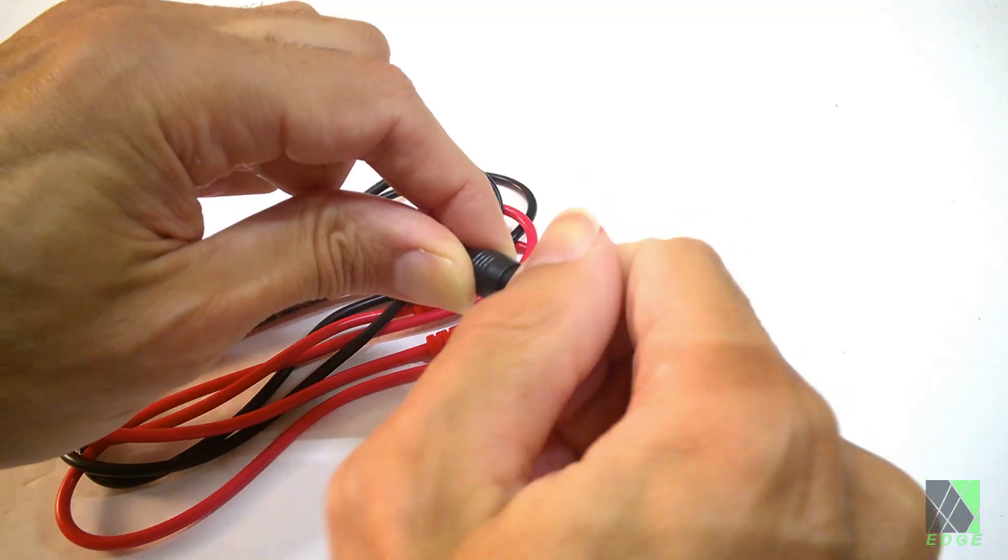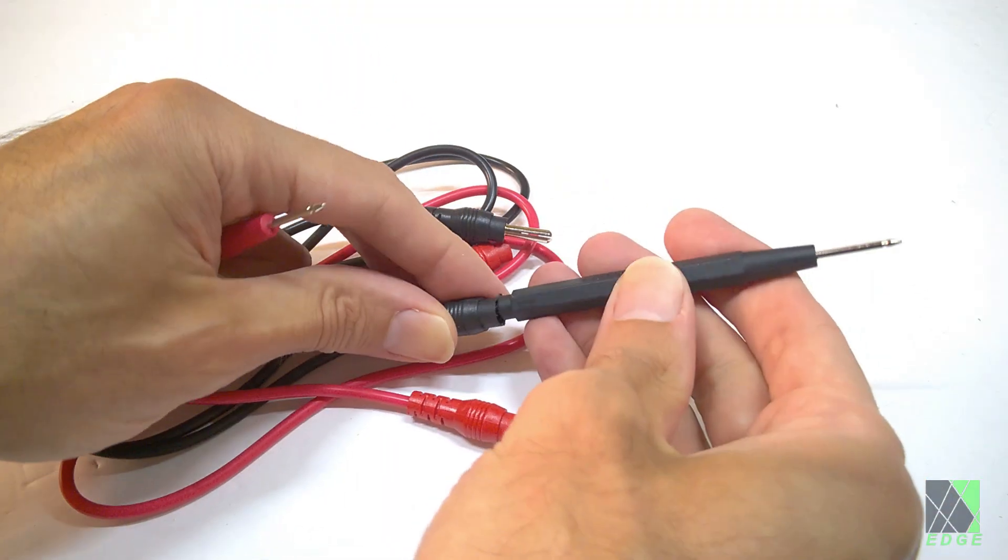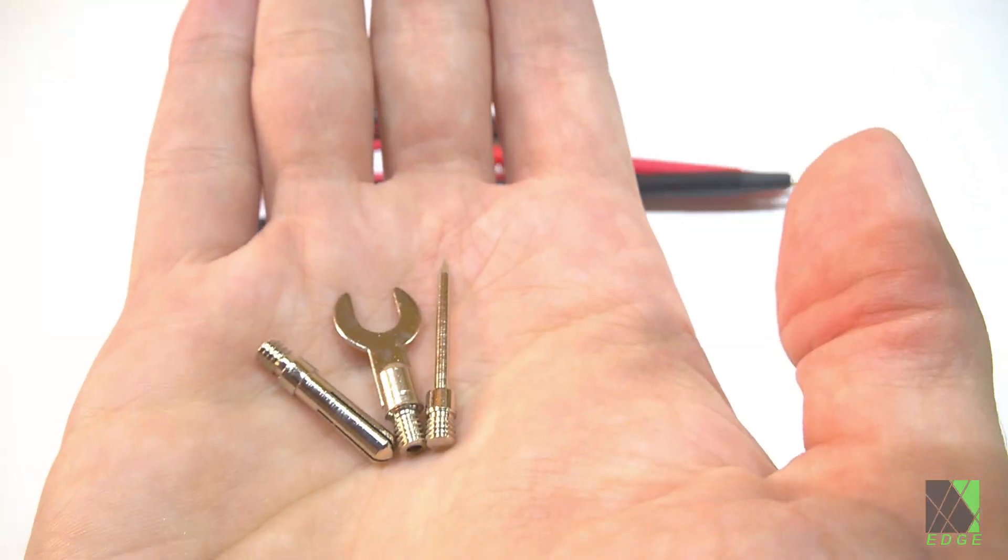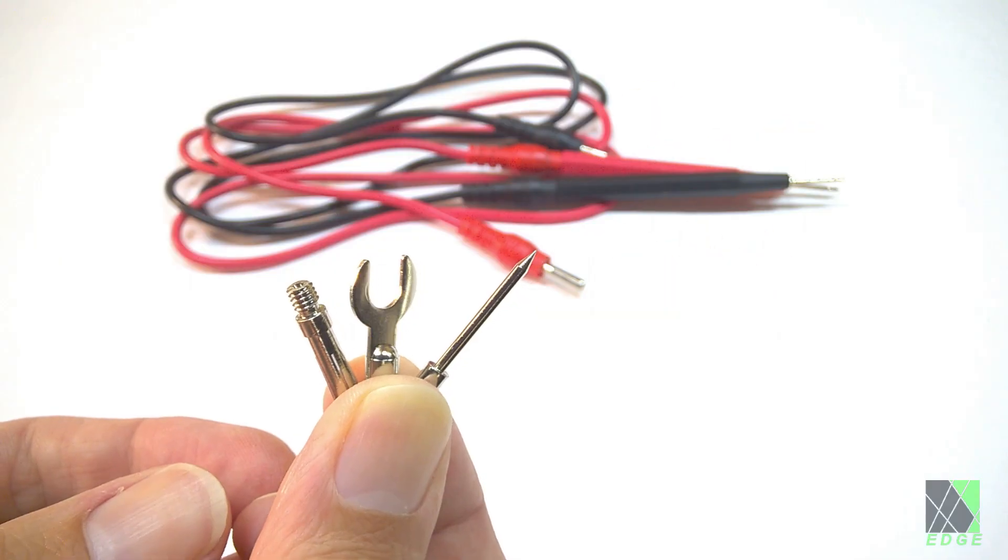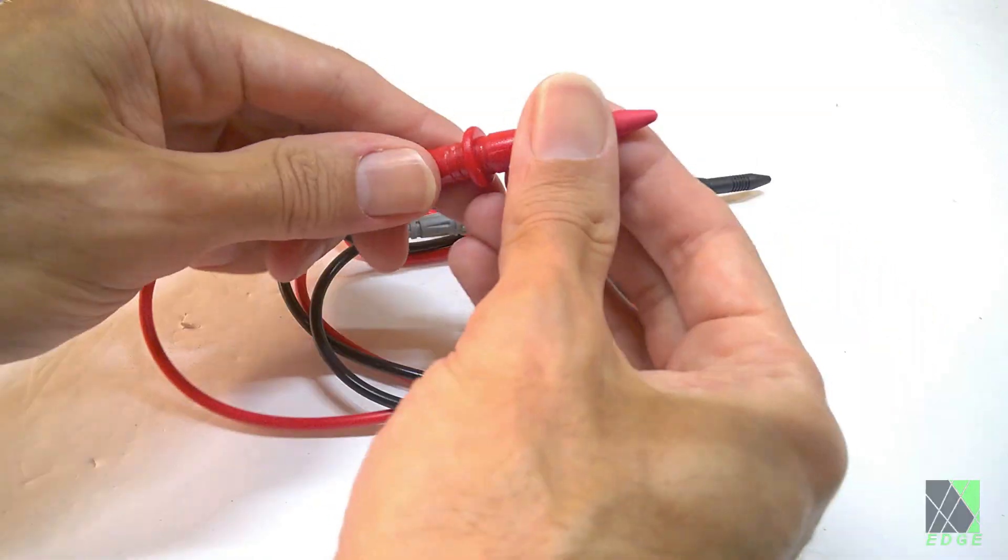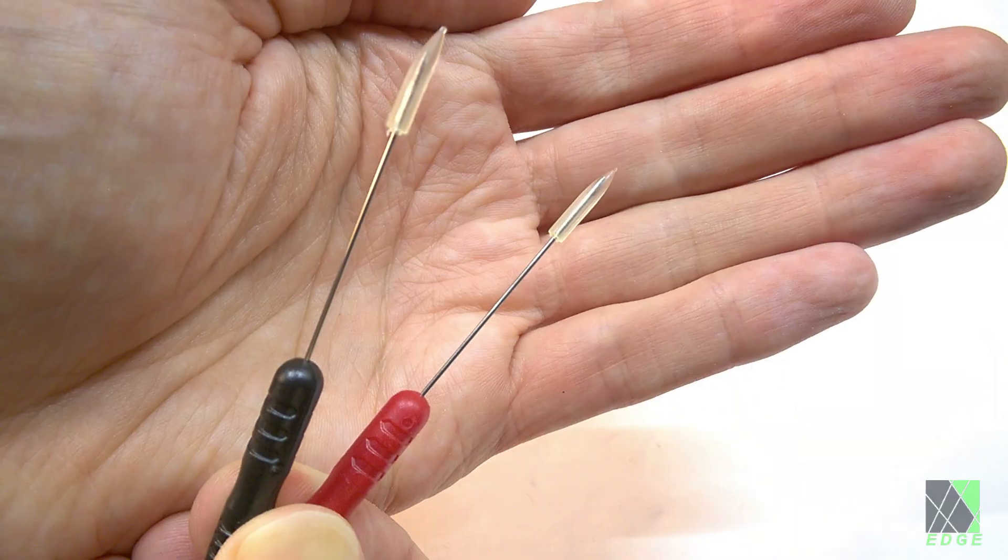Often meters like this don't provide quality probes, but the PN200 does include two complete sets of probes plus a whole bunch of really innovative threaded fittings. I have never seen a meter like this with such a complete probe set, so that gets a thumbs up from me.